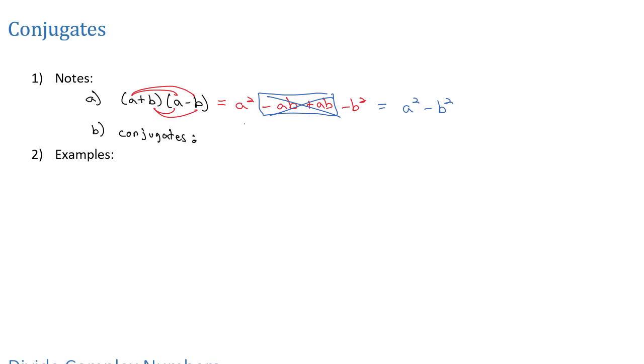The idea of a conjugate is we will change the middle sign. So for example, if I've got something like 5 plus 2i, and I want the conjugate of 5 plus 2i, I just have to change that middle sign to 5 minus 2i.